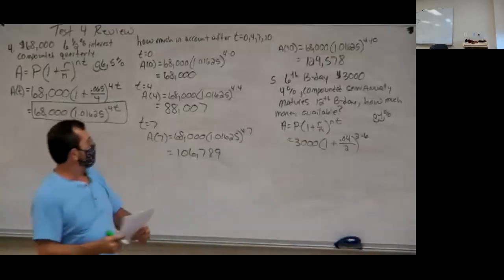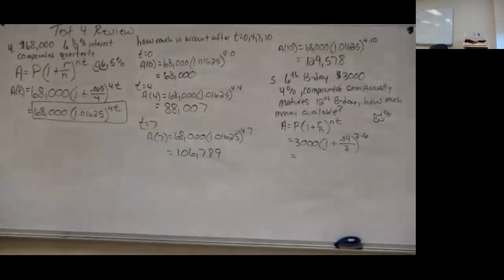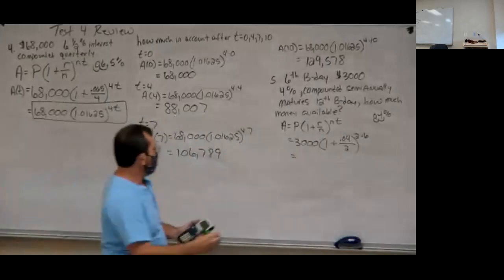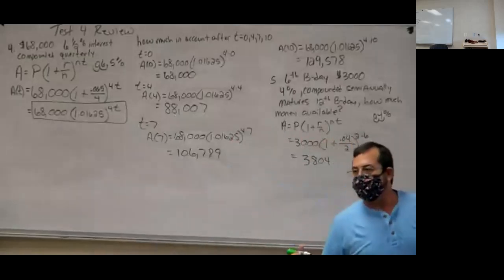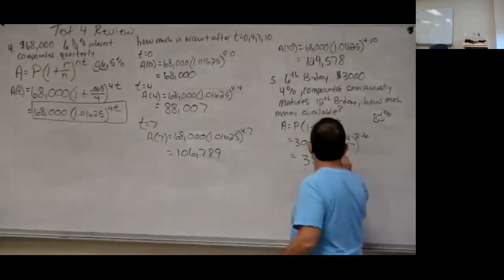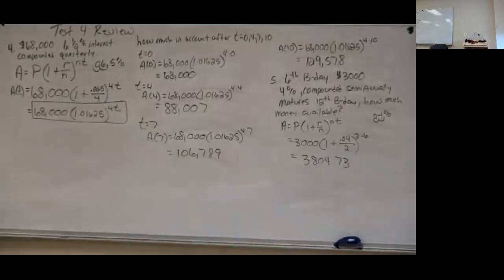Plug that into the document and calculate. Rounding to the nearest cent, I got $3,804.73. The main thing to check on these problems is that the amounts are going up instead of down.